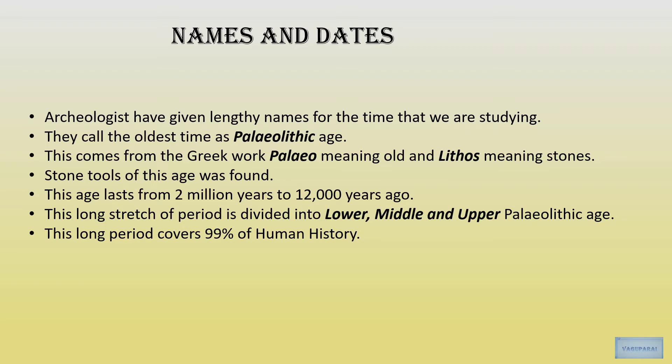We also need to know the different names of the ages and their dates. Archaeologists gave lengthy names to the time periods they identified. The oldest time is called the Paleolithic Age — Paleo meaning old and Lithos meaning stone — because stone tools of this age were found. This age lasts from 2 million years ago to 12,000 years ago and is divided into lower, middle and upper Paleolithic. This long period covers 99% of human history.